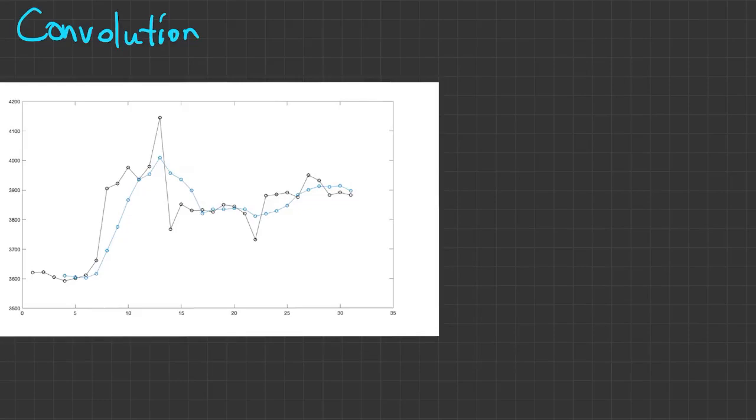If you look at the black curve here, that represents a sequence that has some pretty big jumps in it. A common way to try to smooth out those jumps is to do what's called a moving average.